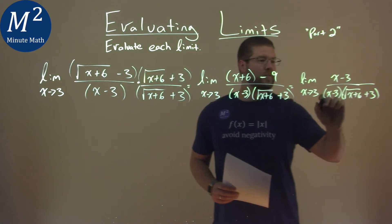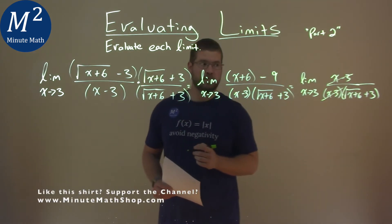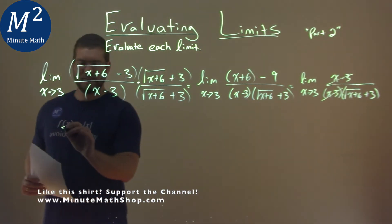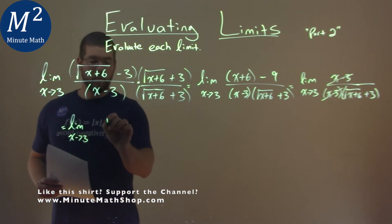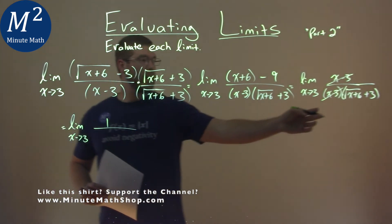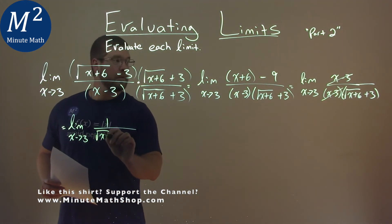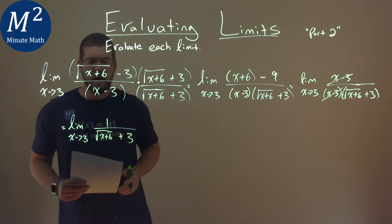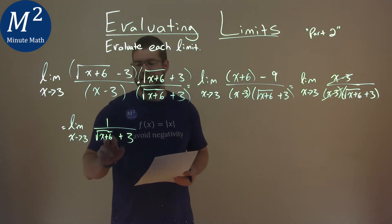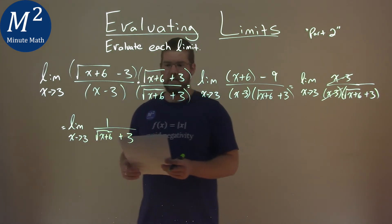Well the x minus 3s will cancel. So now, I know a lot of work for these limits, the limit as x approaches 3 of 1 over the square root of x plus 6 plus 3. And at this point we can plug 3 directly in for x to solve this limit.